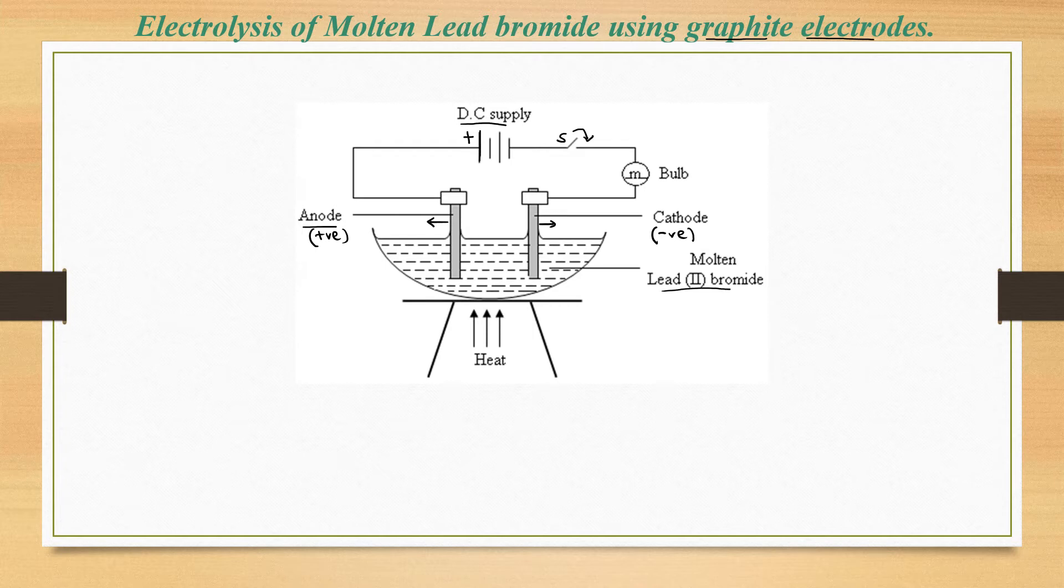As the switch is closed, in our molten lead bromide we have mainly two ions. If you look at the ions present in lead bromide, we have the lead two plus ions (Pb²⁺) and the bromide ions (Br⁻). Because lead bromide is ionic in solution form or in molten form, we shall always have these two ions. When the switch is closed and the circuit is complete, we shall have migration of ions.